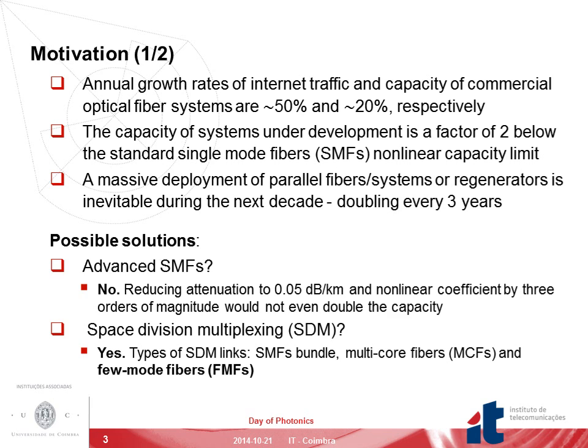A possible solution would be the design of advanced single-mode fibers. However, even reducing the attenuation to 0.05 dB per kilometer and the non-linear coefficient by 3 orders of magnitude, we would not even double the capacity. In fact, the solution for the capacity crunch is the emerging technology called space division multiplexing, which can be based on different types of links: single-mode fiber bundles, multicore fibers, and few-mode fibers.